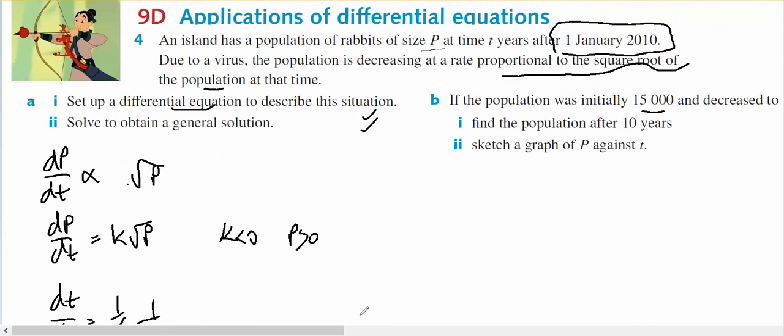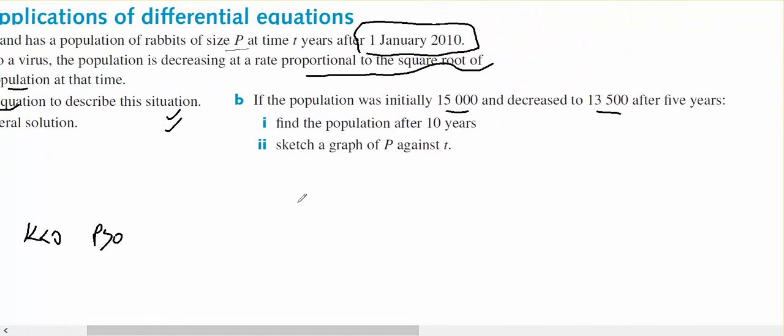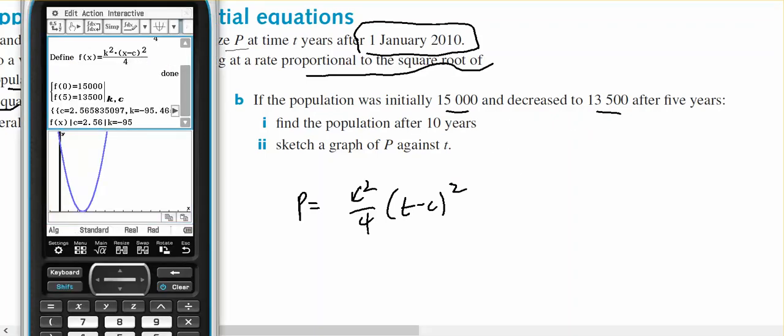I can now use this information. So p equals k squared over 4, t minus c squared, to come up with the population after 10 years and sketch the graph. I've put in my conditions of 15,000 when t is 0 and 13,500 when t is 5, and it's given me a range of values of c and k.